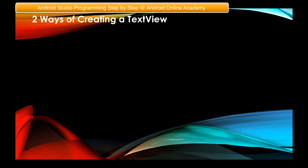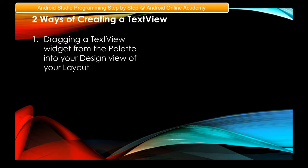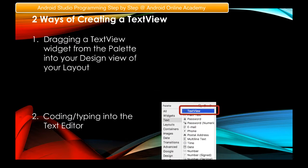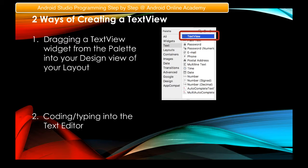There are two ways of creating a TextView. Number one is dragging a TextView widget from the palette into your design view of your layout. Number two is coding — typing directly into the text editor. This image shows the first way: you drag a TextView widget from the palette into your design view of your screen or layout.